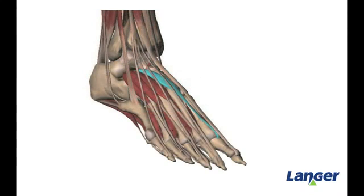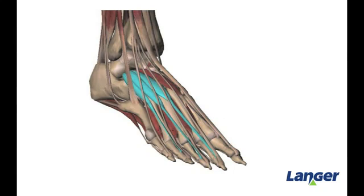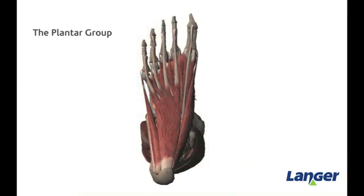The first muscle of the extensor digitorum brevis inserts on the proximal base of the greater toe phalanx, whereas all of the other muscles within the group insert laterally to the extensor digitorum longus tendon. The function of the muscle is to extend the digits at the MTP joints.